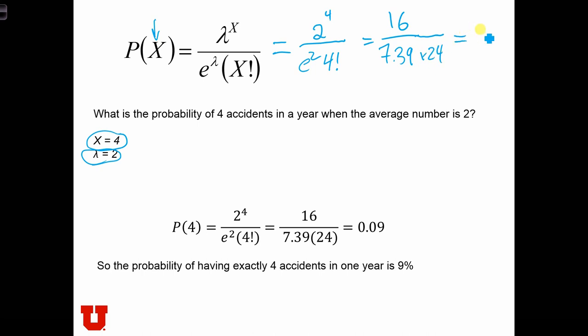And this is roughly equal to 9%. So the probability of having exactly 4 accidents in a year, when usually we only see 2 accidents per year, is 9%.